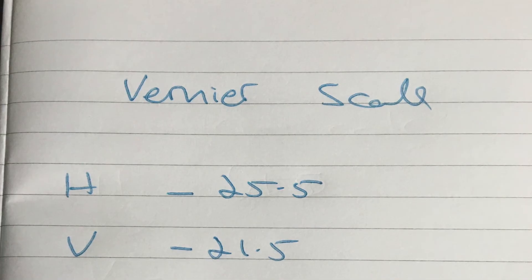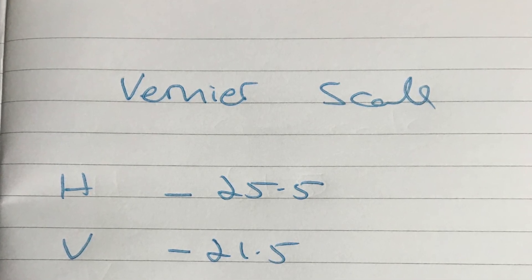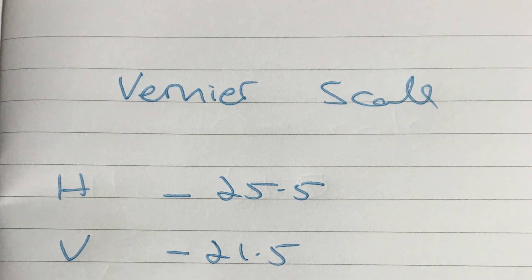And here's how it should be written. You don't need to write Vernier scale for your exam. But you do need an H and a V or a horizontal and a vertical to show the examiner you understand what you've written.